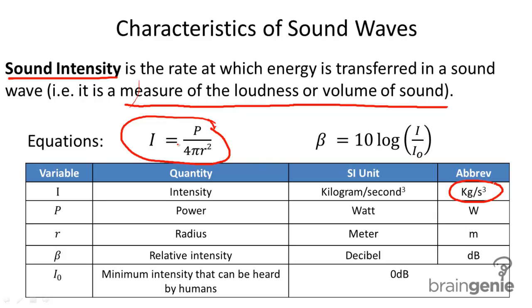That's one direct measure, and this is the formula. It is I equals P power divided by 4 pi r squared.